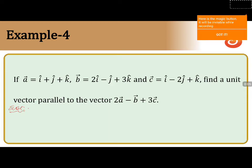If vector a equals i cap plus j cap plus k cap, while vector b equals 2i cap minus j cap plus 3k cap, and vector c equals i cap minus 2j cap plus k cap, find the unit vector parallel to the vector 2a minus b vector plus 3c vector.